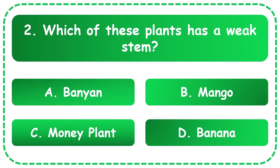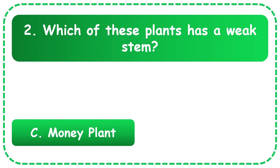Question 2: Which of these plants has a weak stem? The options are banyan, mango, money plant, and banana. The correct answer is money plant.